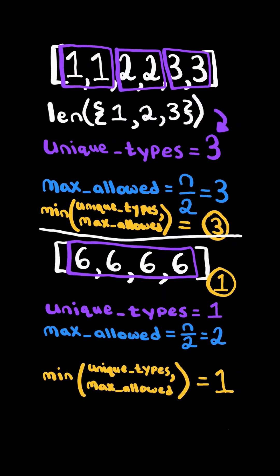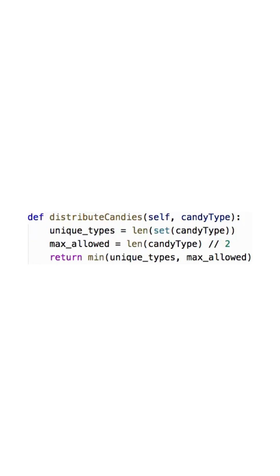Unique types is one, max allowed is two, so the number of different types of candies she can eat is one. And here's the code to do so.